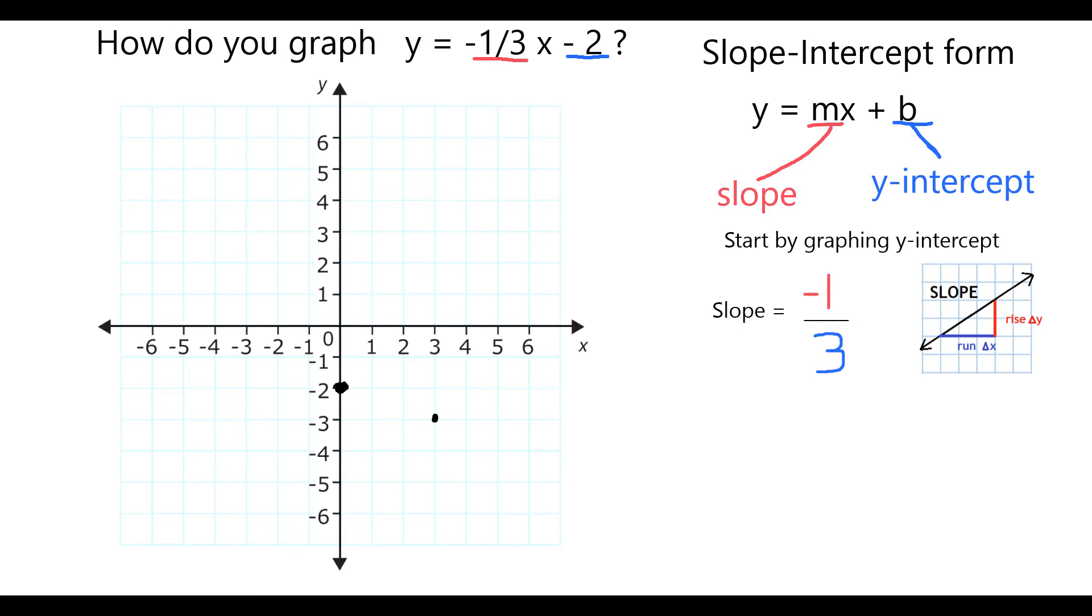Again, down 1 over 3, like so. Following the same pattern in the opposite direction, I can go up 1 and back 3. Again, up 1 and back 3.